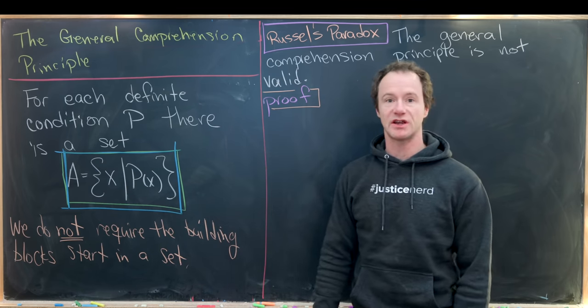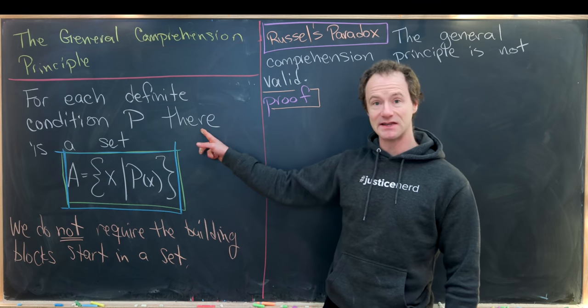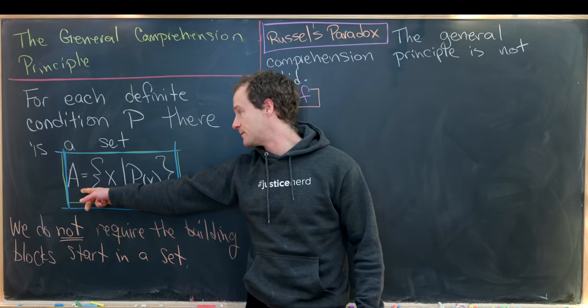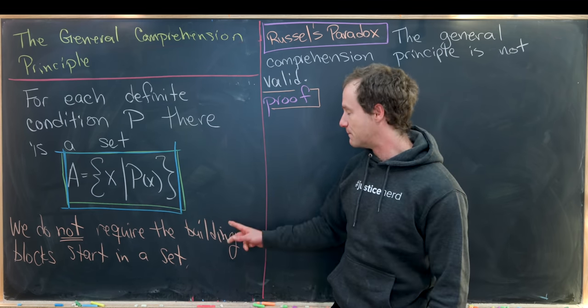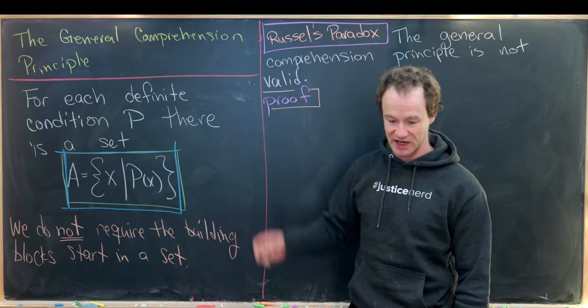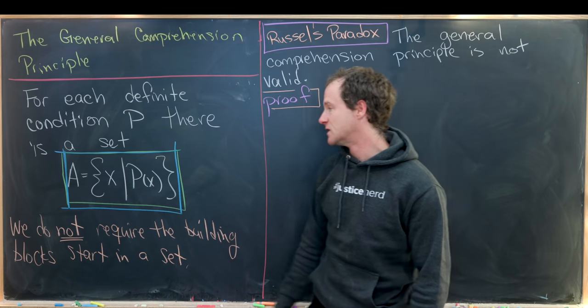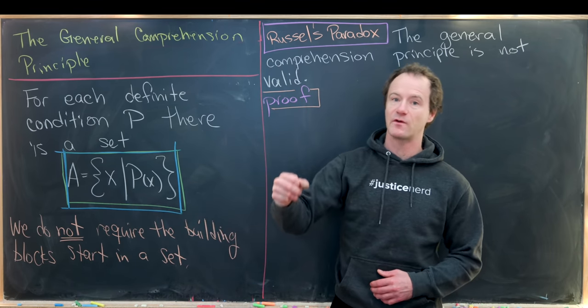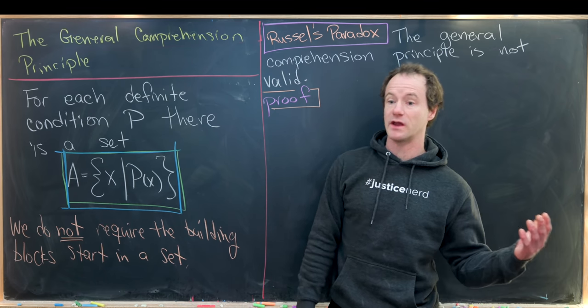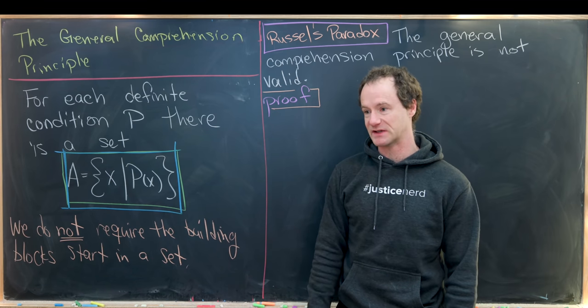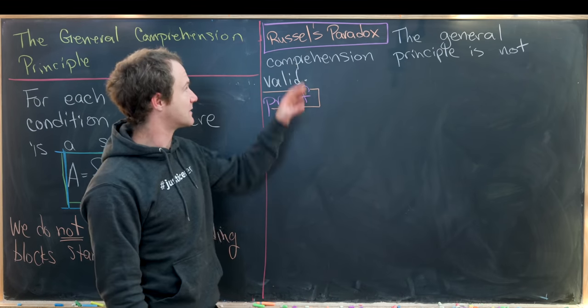So the general comprehension principle. It says for each definite condition P, there is a set built as follows. So we'll call that set A, and it will be given by all X such that P of X. So I want to note here that the big difference between this and the separation axiom or the axiom of separation is we do not require the building blocks to start in a set. So notice these X are not assumed to come from any set. Well that's a little bit hard to wrap our heads around because a priori, we kind of think about everything as coming from a set. But as we'll see, not every collection of objects forms a set.